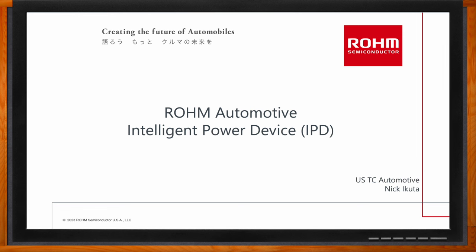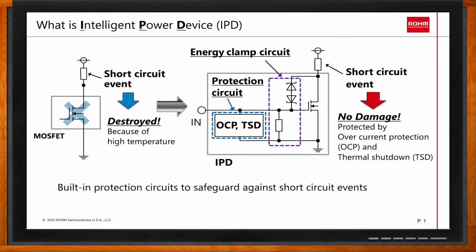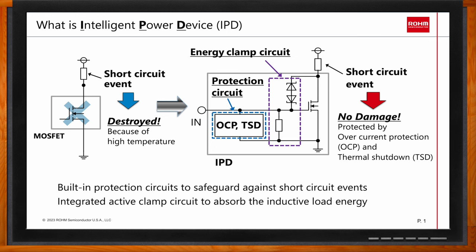So we're talking about Rohm's automotive intelligent power device today — but first, what exactly is an IPD? If a power MOSFET is used as a switch and is turned on when a load is short-circuited, a large current will flow through the MOSFET causing it to heat up and fail. An intelligent power device (IPD) integrates overcurrent protection, thermal shutdown, energy absorption clamp circuit, and a MOSFET into a single chip. In simple terms, an IPD is a MOSFET with a built-in protection circuit.